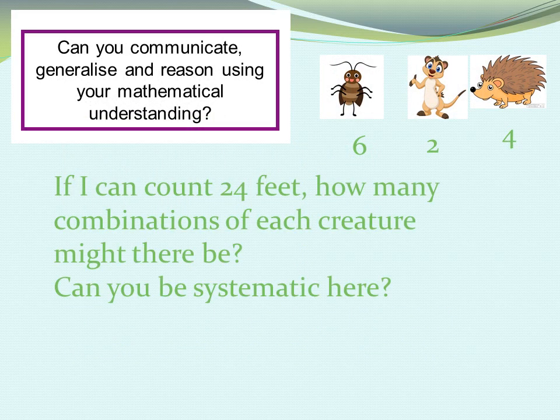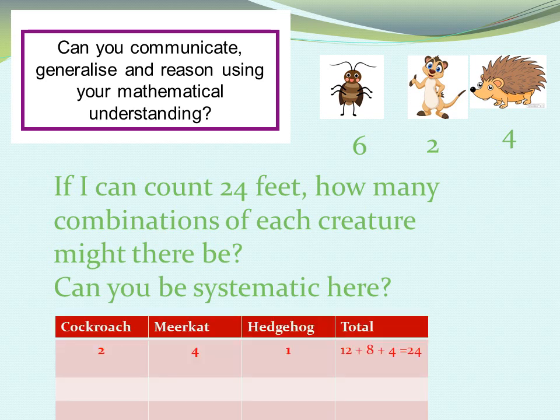But what if these creatures were travelling in their group? Again I can only see their feet, but there are combinations of creatures. There might be lots of cockroaches and not many meerkats, or several hedgehogs. There are going to be different solutions, so we need to be systematic — we're going to set out a table. For example: two cockroaches making 12 feet, four meerkats making 8 feet, and one hedgehog making 4 feet — 12 plus 8 plus 4 gives the total of 24 feet. But what other combinations can you find?